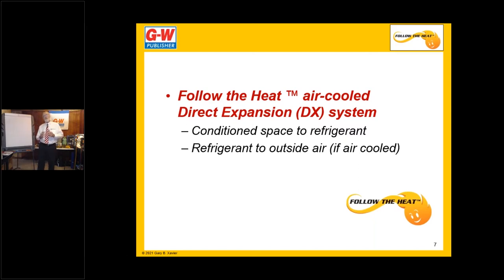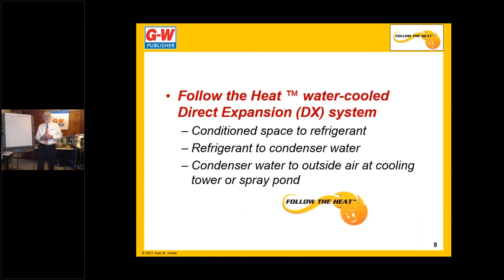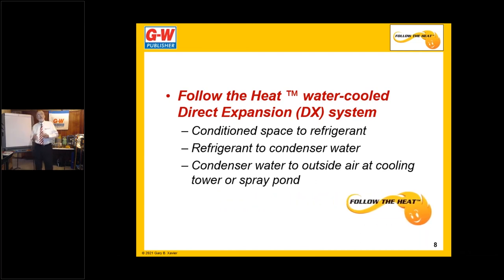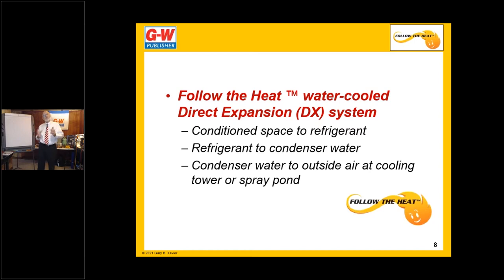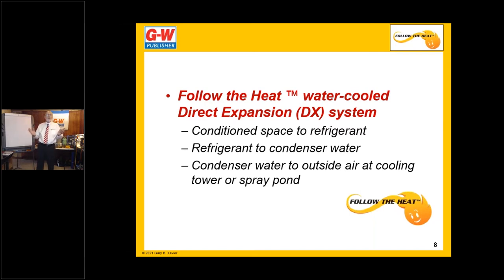But if we use water as a medium, then it becomes three steps or four. With a water-cooled system with a DX evaporator, it's three steps. The heat goes from the conditioned space to the refrigerant at the evaporator, from the refrigerant to the condenser water at the condenser, and then from the condenser water to the outside air. We can send that condenser water down the drain — a wastewater system — or to a cooling tower or spray pond.